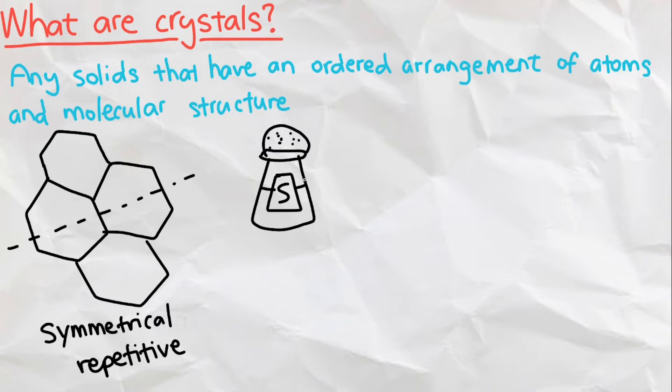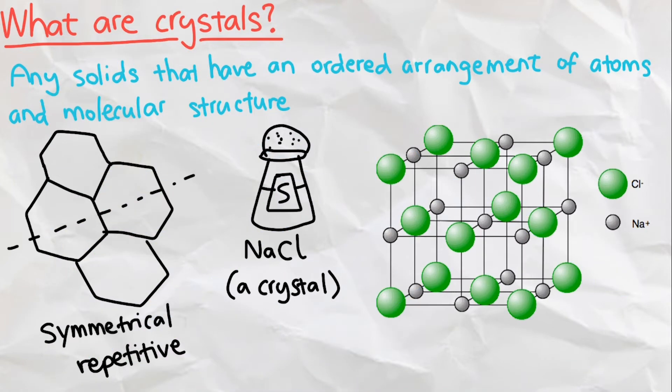Take table salt, sodium chloride for example, which is actually a crystal. If we look into the arrangement of table salt, we see that it is in a 3D grid shape with the alternating pattern of sodium ions and chlorine ions.